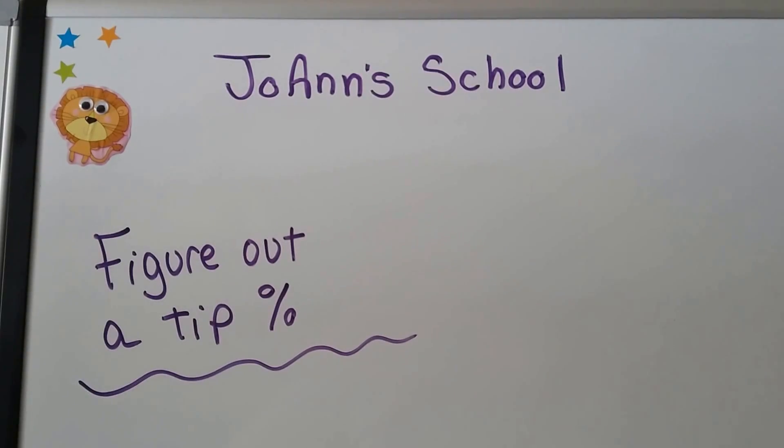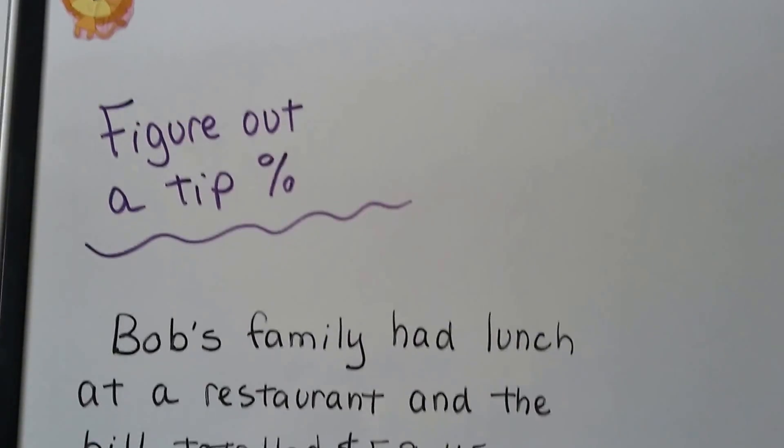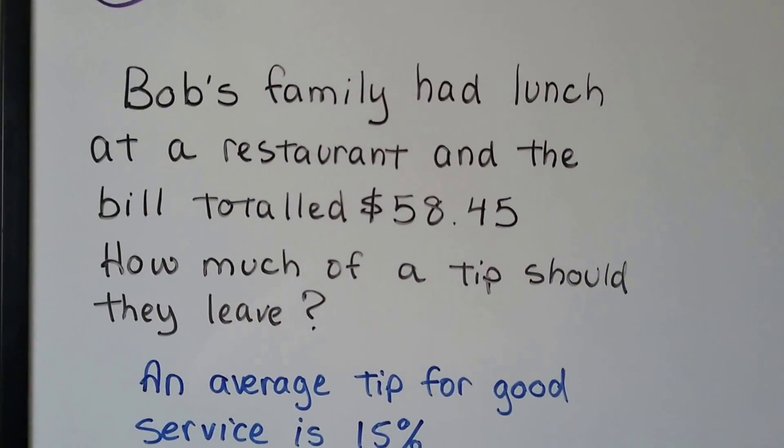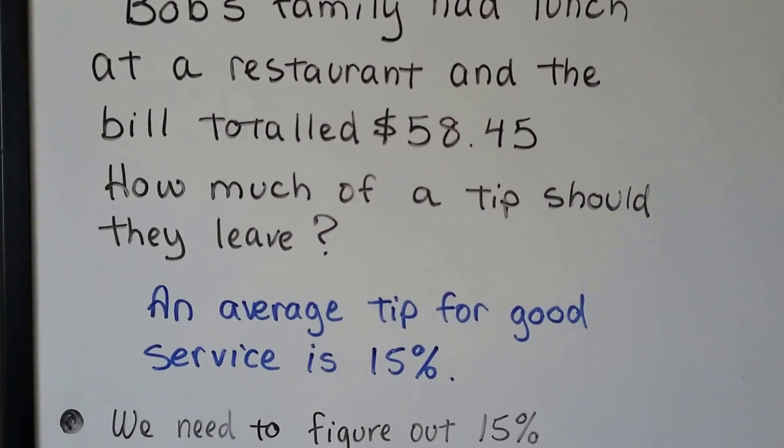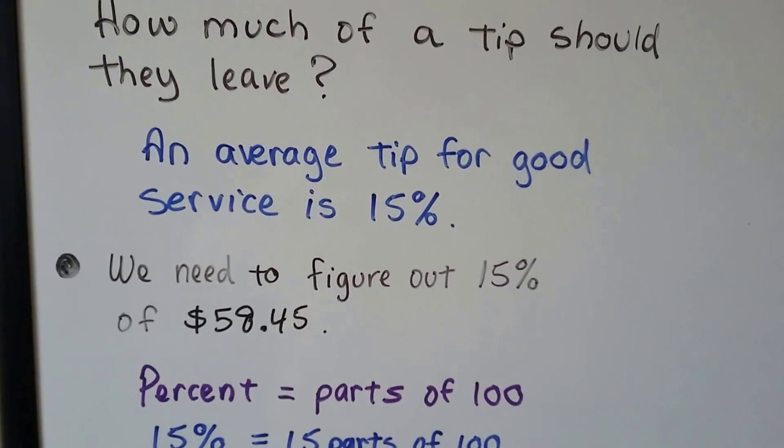I'm going to show you a trick to figuring out a tip very quickly. Alright, so Bob's family had lunch at a restaurant and the bill totaled $58.45. How much of a tip should they leave? The average tip for good service is 15%. We need to figure out 15% of $58.45.